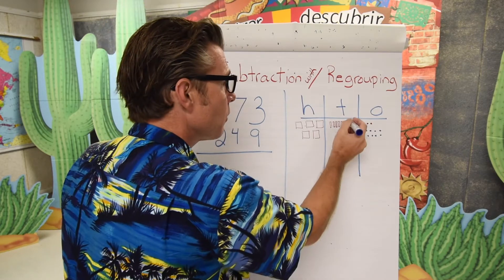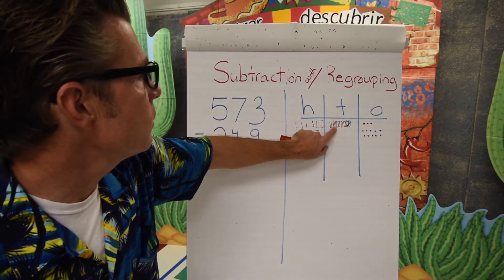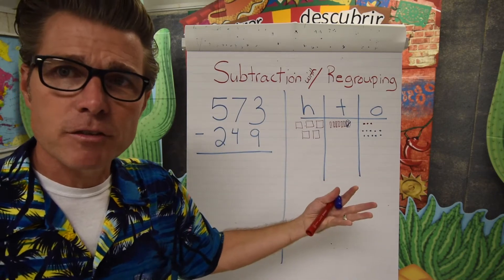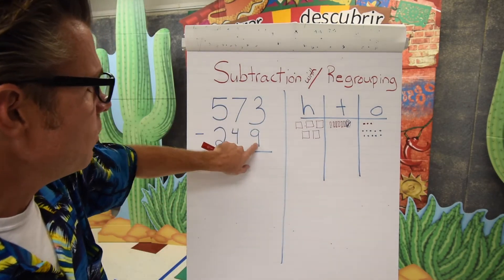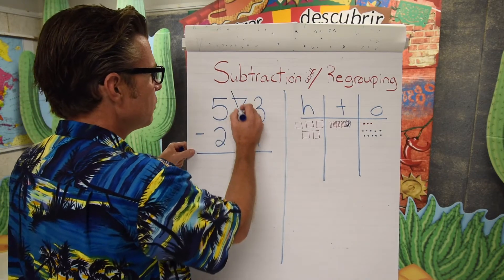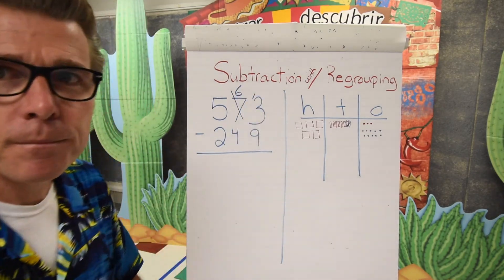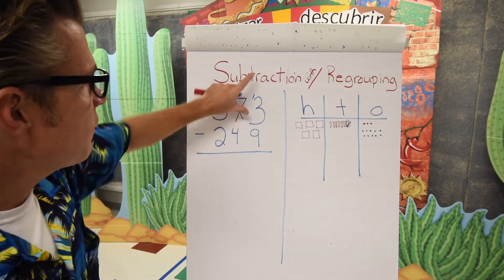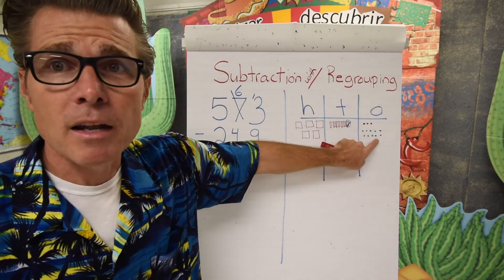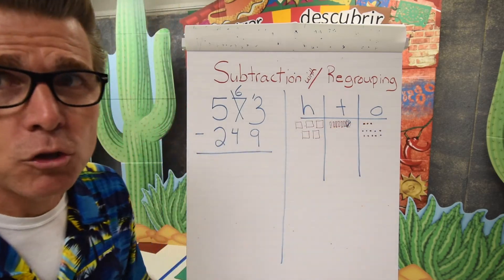That ten is now gone, so I mark through it, leaving only six tens left. Coming over to our written problem, we mark through the seven, put a six up, and add one to the three, giving us thirteen in the ones place. This is the traditional way of looking at it — I've got thirteen in my ones column.